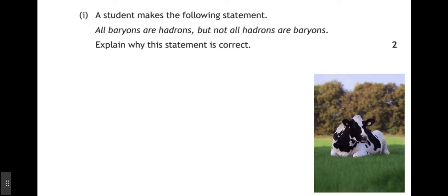So a student makes the following statement. All baryons are hadrons, but not all hadrons are baryons. Explain why this statement is correct. Well, you'll be wondering why there's a cow on this slide. Well, a cow is a mammal, but all cows are mammals, but not all mammals are cows. And that kind of is the same situation with baryons and hadrons.